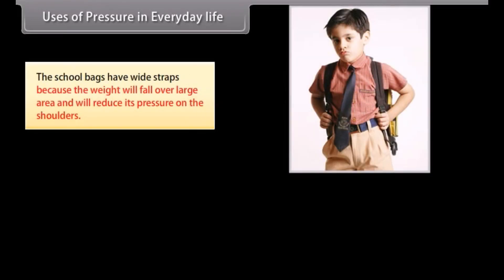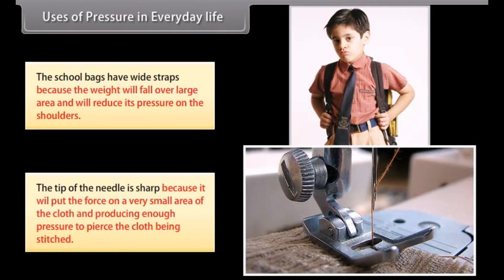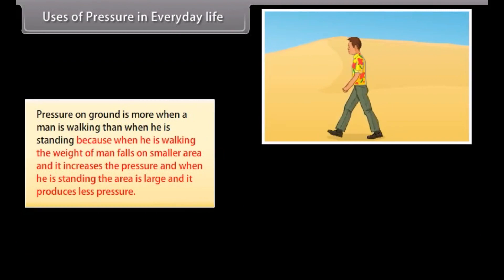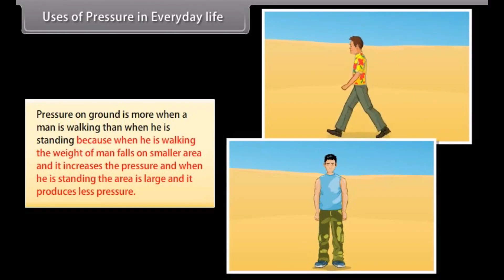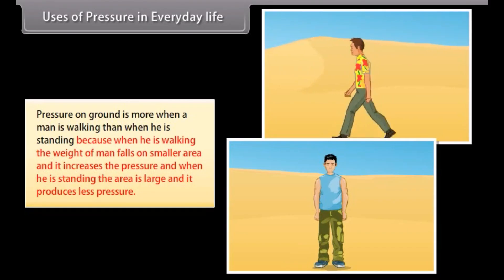Use of pressure in everyday life. School bags have wide straps because the weight falls over a large area, reducing pressure on the shoulders. The tip of a needle is sharp so it puts force on a very small area of cloth, producing enough pressure to pierce the cloth being stitched. Pressure on the ground is greater when a man is walking than when standing, because when walking the weight falls on a smaller area increasing pressure, while standing distributes weight over a larger area.